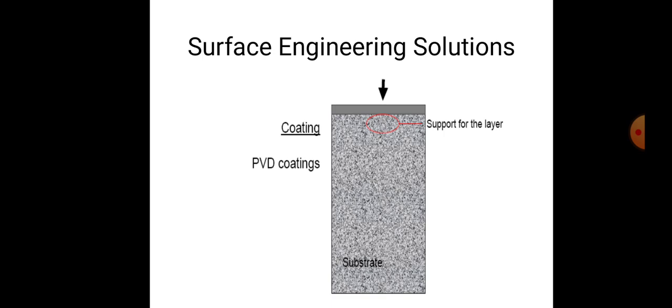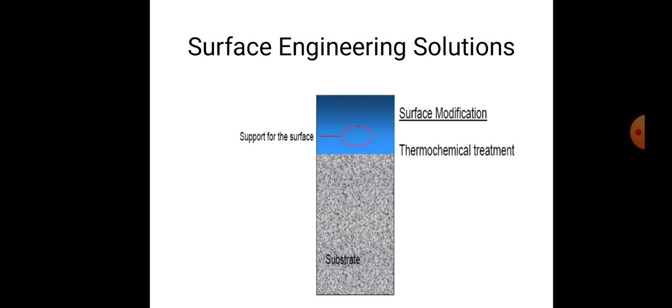We have to see whether the surface engineering solution is correct. Looking at the second figure, at the topmost surface, surface modification is done through thermochemical treatment. As heating increases, chemical reactions occur between two layers, and those two layers create a third layer through the combined chemical and heating treatment.